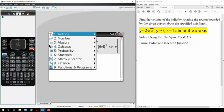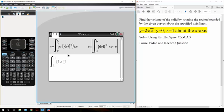So we simply hit menu, calculus, integral. It's going to be from 0 to 4, and we have pi times f of x squared. So f of x is 2 square root of x.